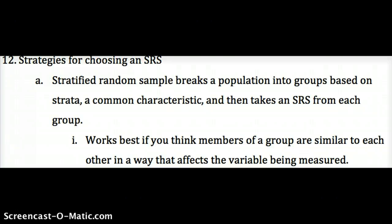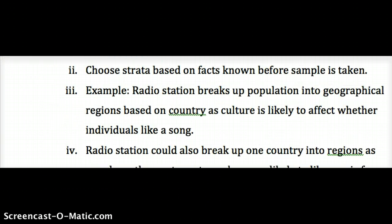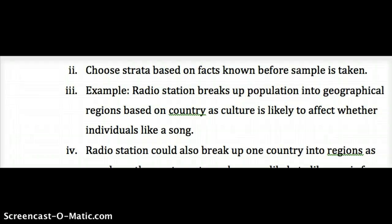Strategies for choosing an SRS are very important. The first is a stratified random sample, where we break the population into groups called strata based on a characteristic, and then take an SRS of the same size from each group. You choose the strata before doing any work, based on facts known before the sample is taken. For example, a radio station might break the population into geographical regions, since where someone lives is likely to affect what type of music they like.